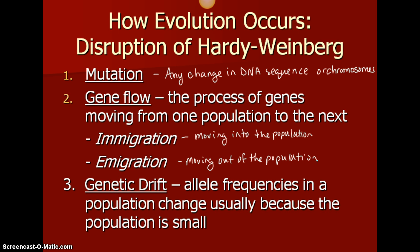Genetic drift is when allele frequencies in a population change because the population is small. Allele frequencies, which we looked at in the last section, involve calculating how many big B's there are versus how many total big B and little B letters there are. You're looking at that gene pool and seeing it drift from one extreme to another.